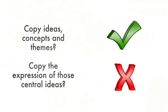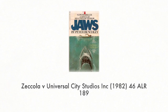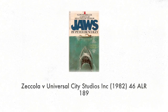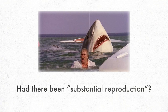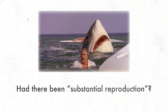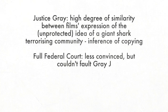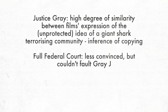The Copyright Act does not protect ideas or concepts. So at this point, it's useful to consider two Australian cases that came to different conclusions on the question of objective similarity. The first is Zicola and Universal City Studios, which was a claim by Universal that Zicola had infringed its copyright in Steven Spielberg's 1975 film Jaws and its associated novel and screenplay. The court considered the major issue to be whether Zicola's film, Great White, had substantially reproduced either the novel Jaws or the screenplay. Justice Gray viewed both films back to back and found such a high degree of similarity between them that there was an unavoidable inference of copying.